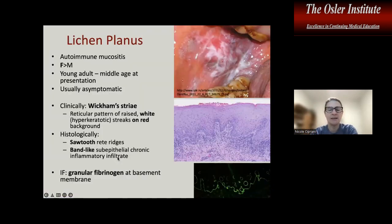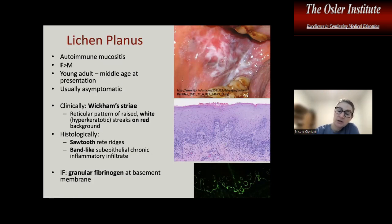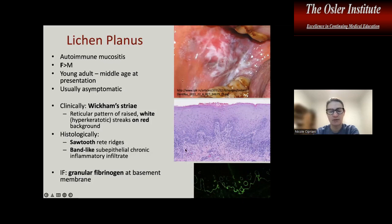Lichen planus is an autoimmune mucositis generally in young to middle-aged females. It presents as characteristic Wickham's striae, which are white streaks on red patches. On biopsy, we see sawtooth or downward-pointing rete ridges with a very dense band-like chronic inflammatory infiltrate in the stroma. On immunofluorescence, we see linear to granular deposition of fibrinogen at the basement membrane, which is diagnostic of lichen planus in association with the histologic picture.